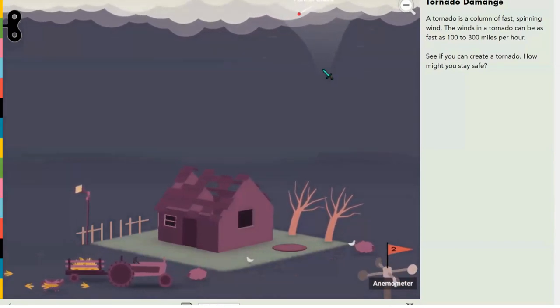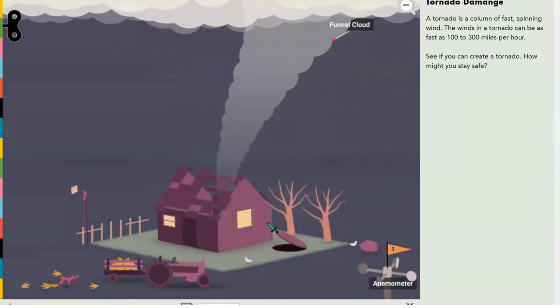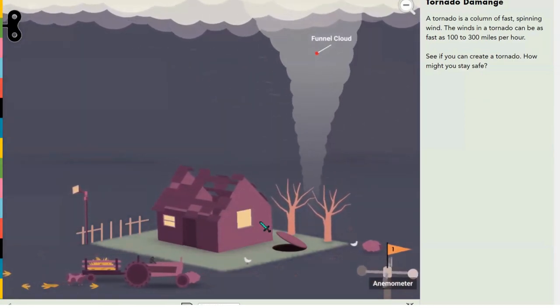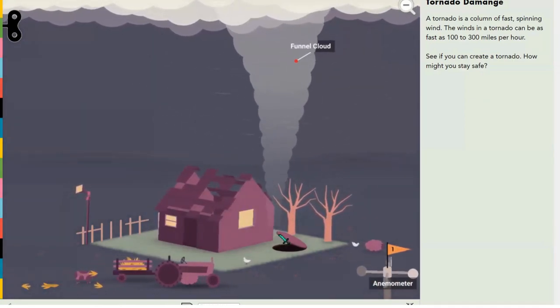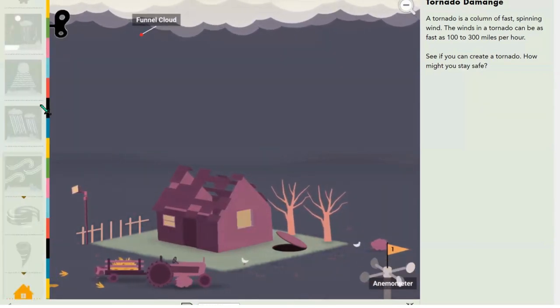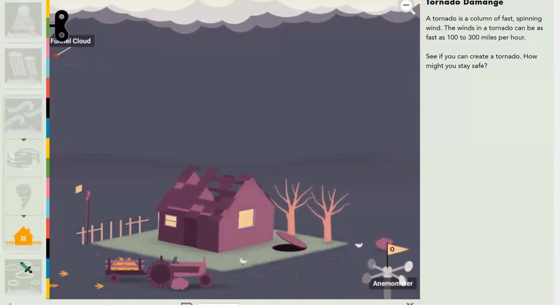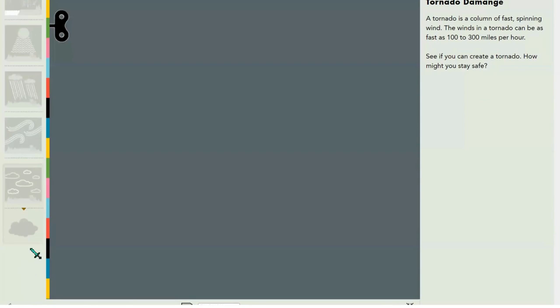A tornado is a column of fast-spinning wind. The winds in a tornado can be as fast as 100 to 300 miles per hour—more than 300 kilometers per hour, faster than anything can go.